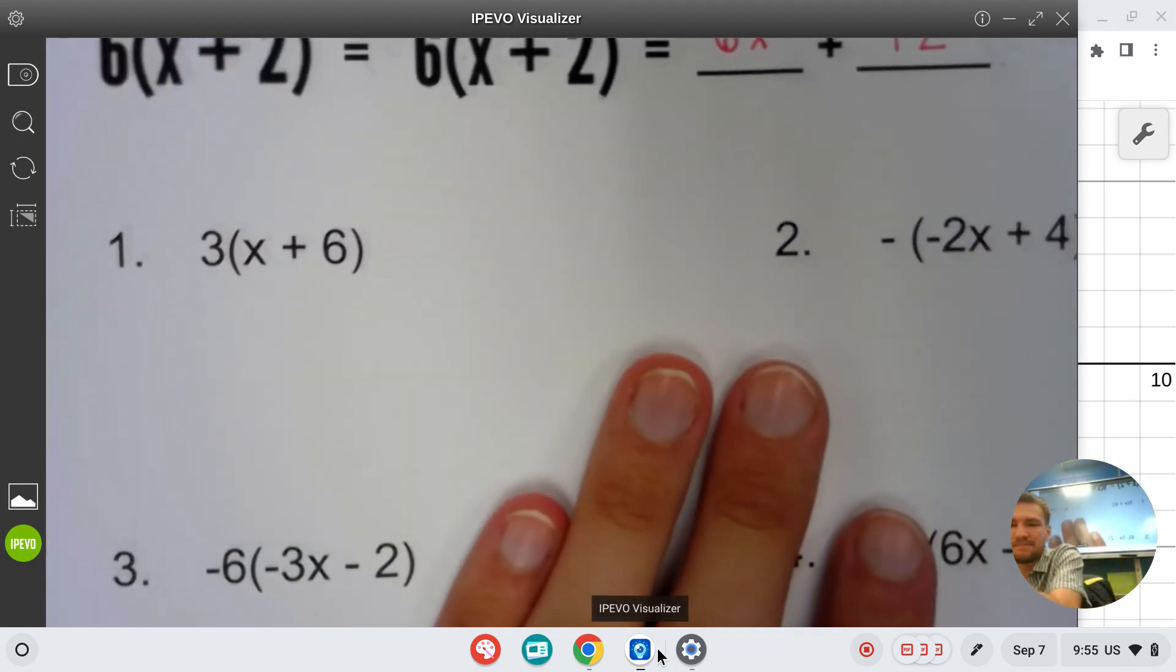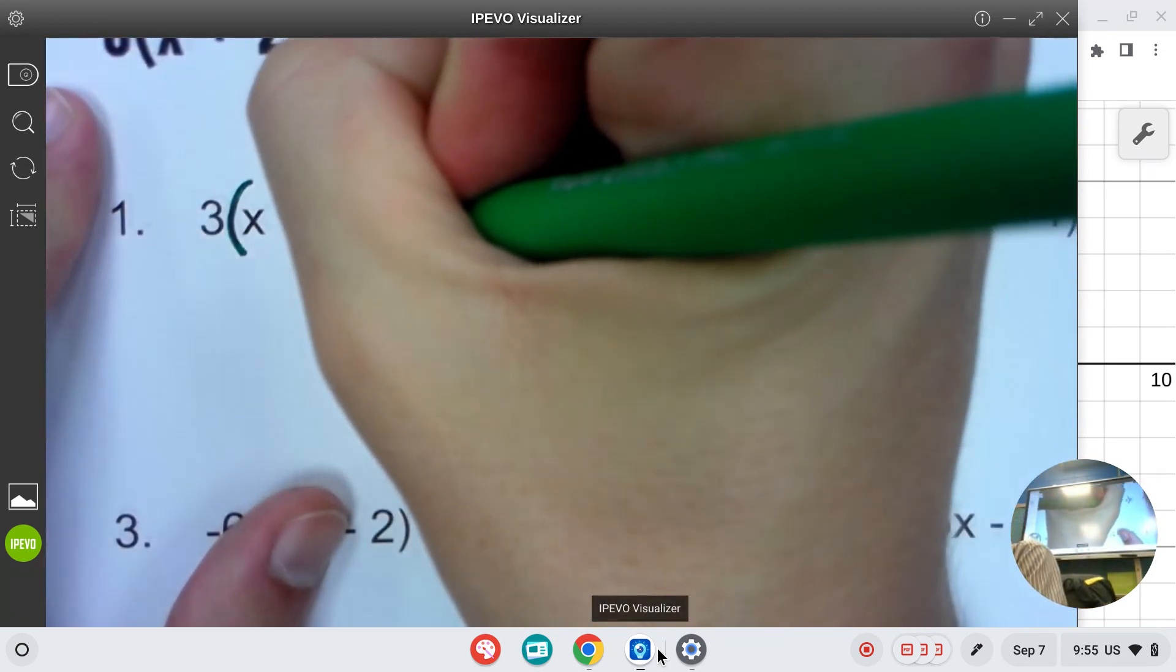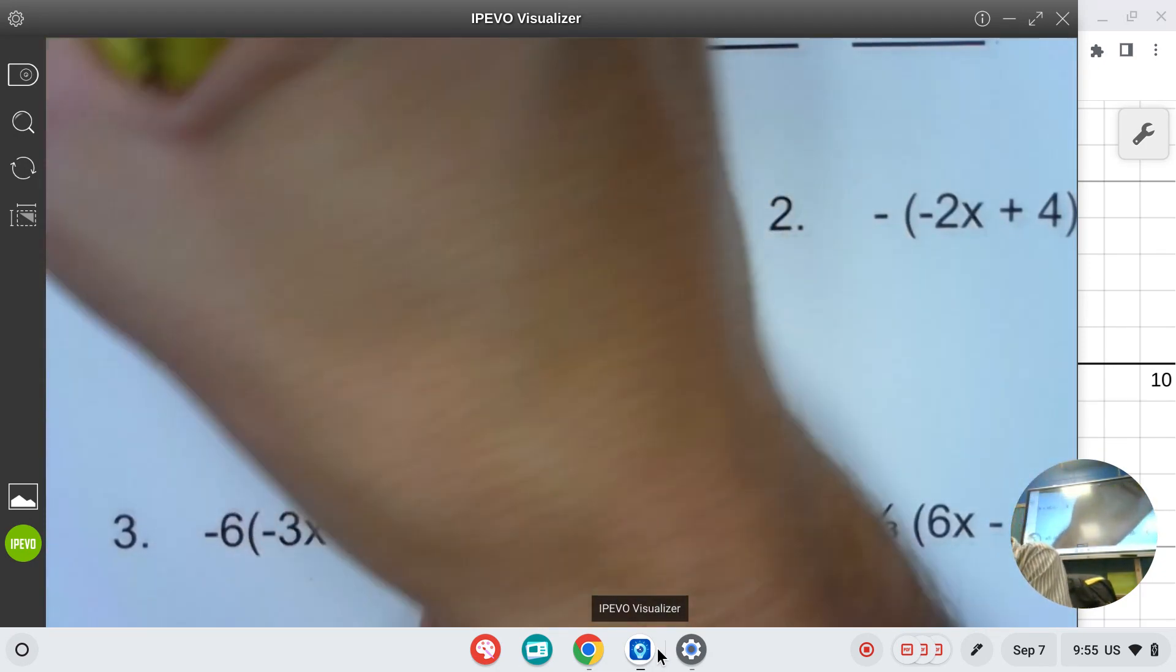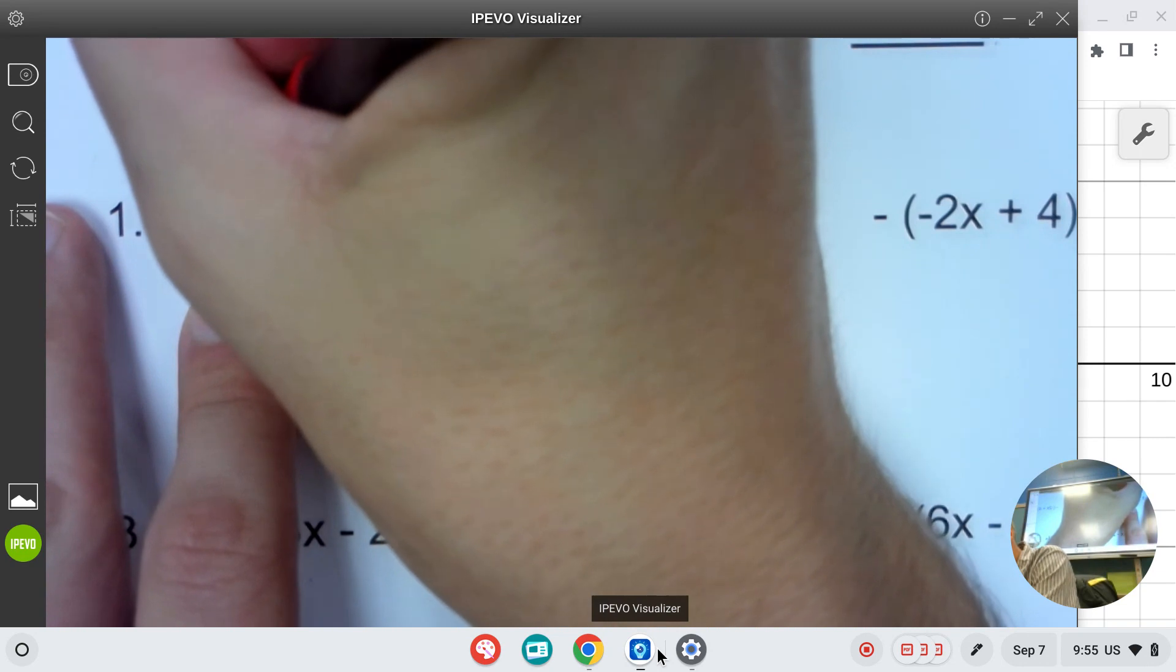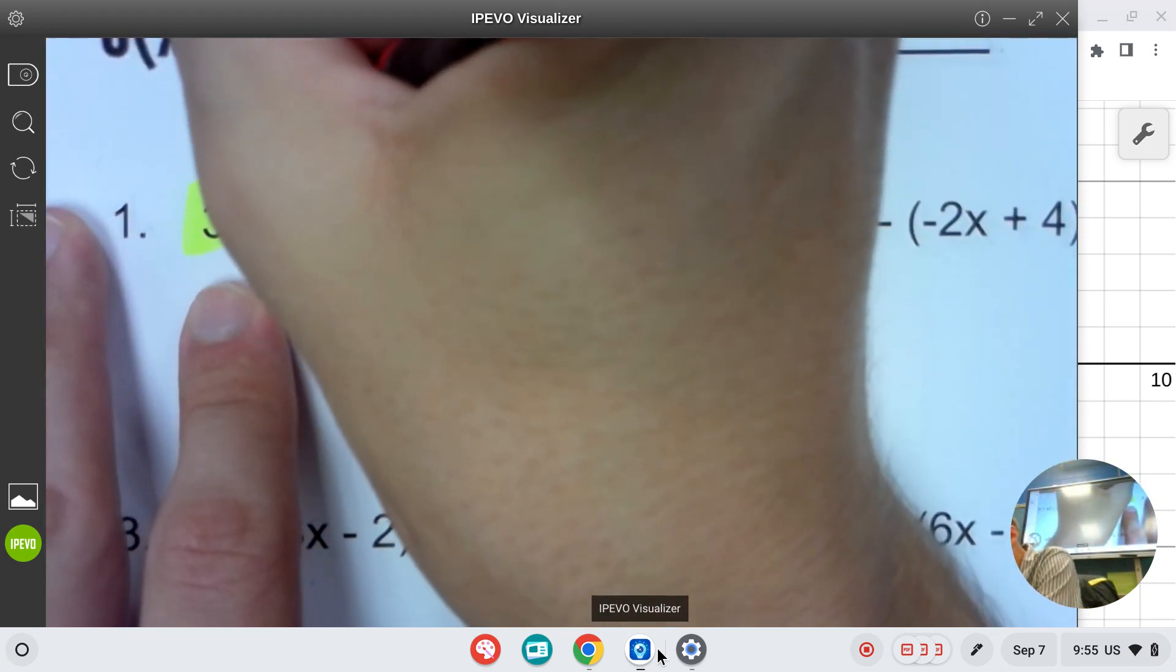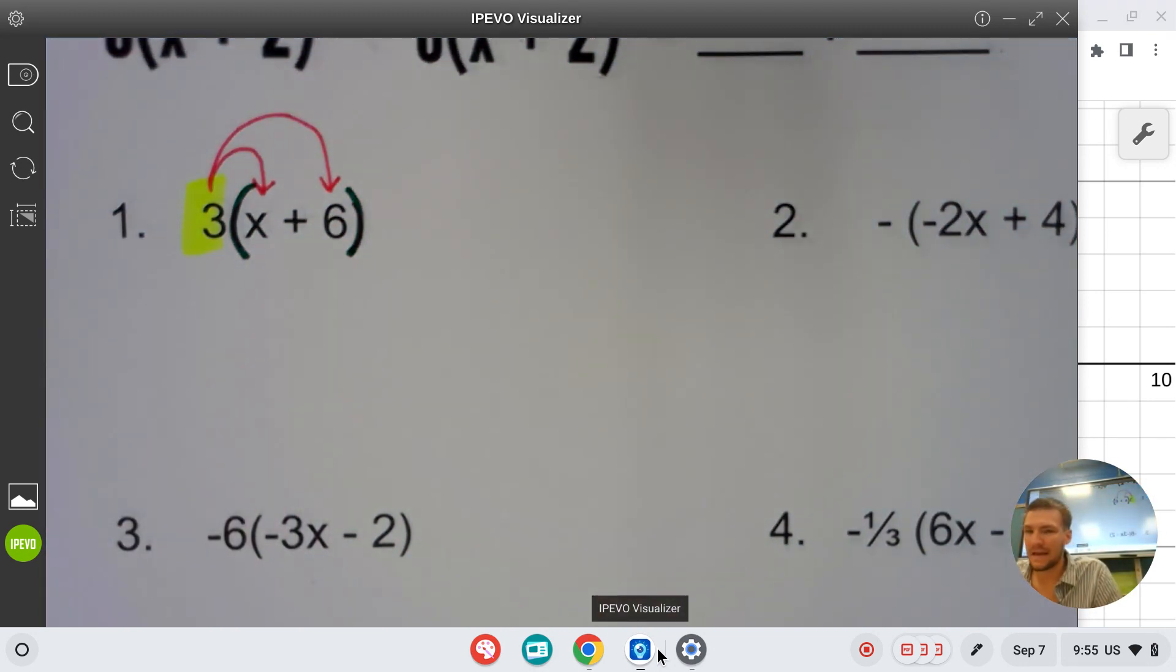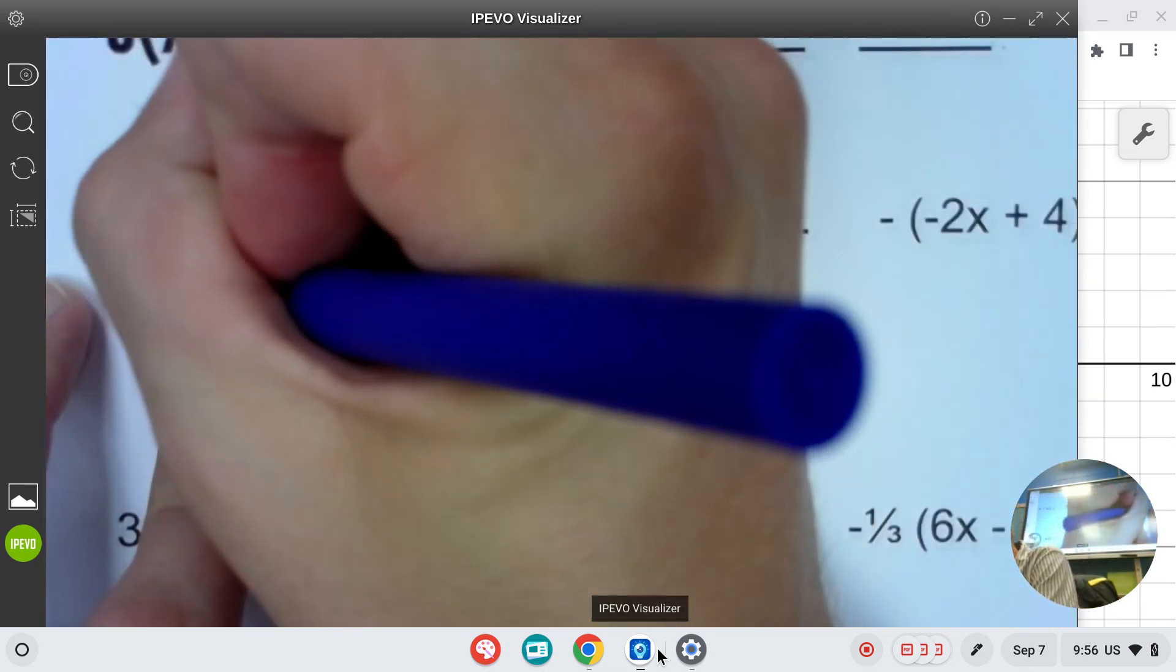Alright, let's get into our very first question. Number one. We know that distribution is needed whenever we see parentheses and a number in front of those parentheses. So this is kind of our clue. This is our key. And so, okay, I'm thinking nice. I'm going to need to use the distributive property, which is a multiplication property. I'm going to want to draw arrows from the three out front to the first number. And then I'm going to go back and draw a new arrow from the three to the six.